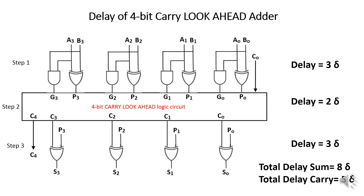The third step is made by an Exclusive OR gate to logically combine the carries and propagate signals, so the delay is 3δ. Adding the steps: total delay of the sum = 3δ + 2δ + 3δ = 8δ. Total delay for the carry = 3δ + 2δ = 5δ. So after a constant time delay of 8δ you have generated the sum in a 4-bit Carry Lookahead Adder.